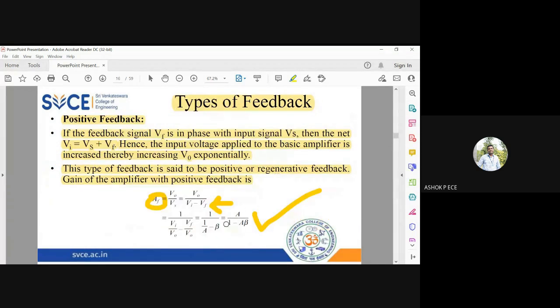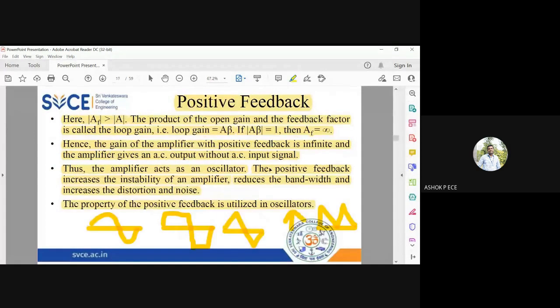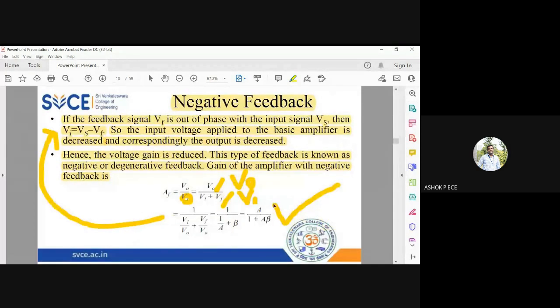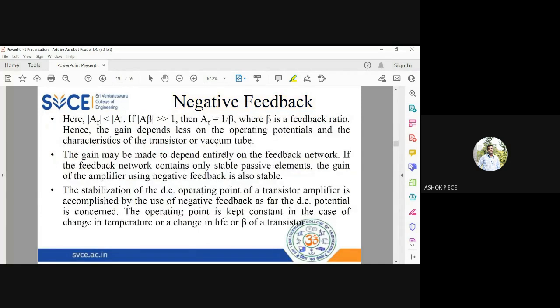If you take LCM, you get A by 1 plus A beta. Previously it was A by 1 minus A beta. That is the only difference. The gain with feedback AF is given by A by 1 plus A beta. In the fraction, the denominator has a plus sign, so this value will be larger, so the AF value will be smaller. When you have negative feedback, the gain after feedback will be very very less when compared to capital A, which is the gain without feedback.